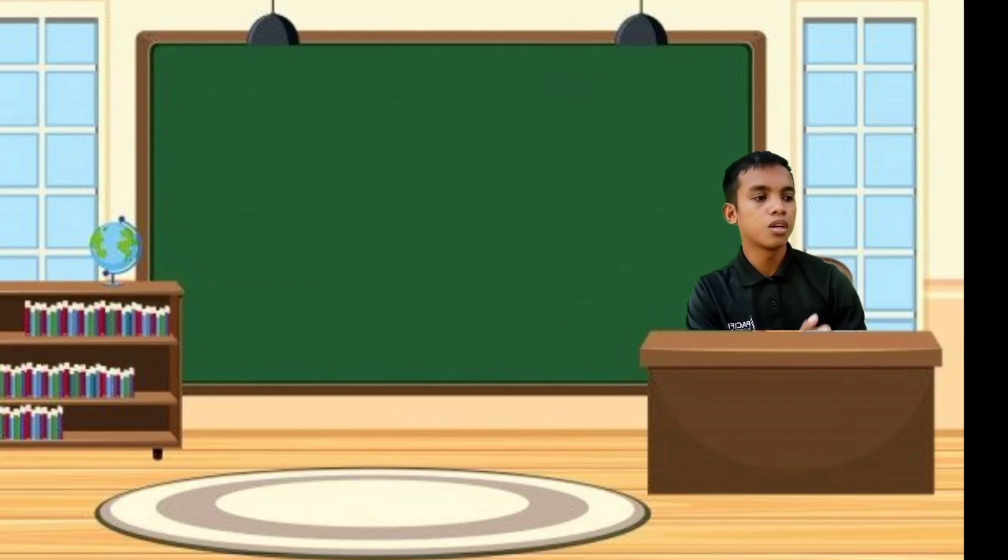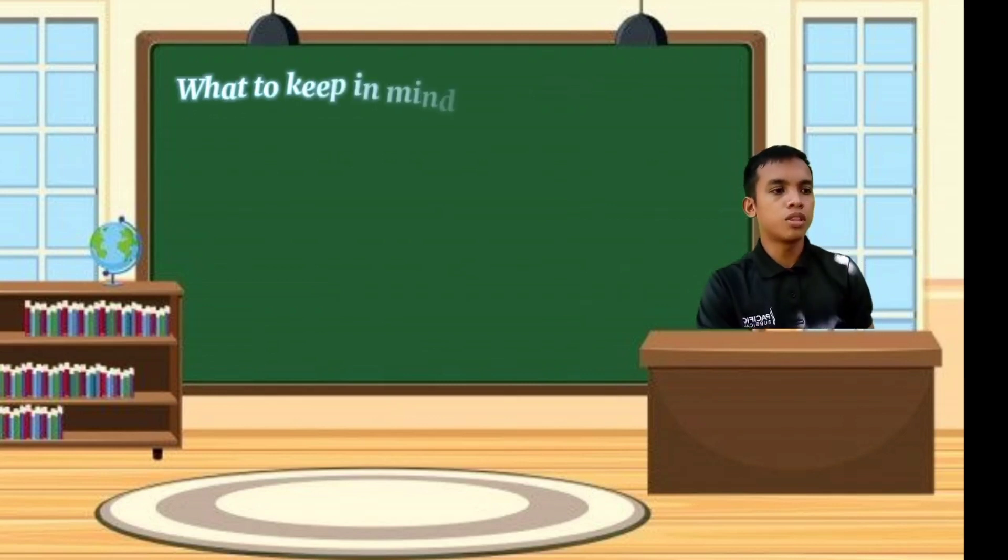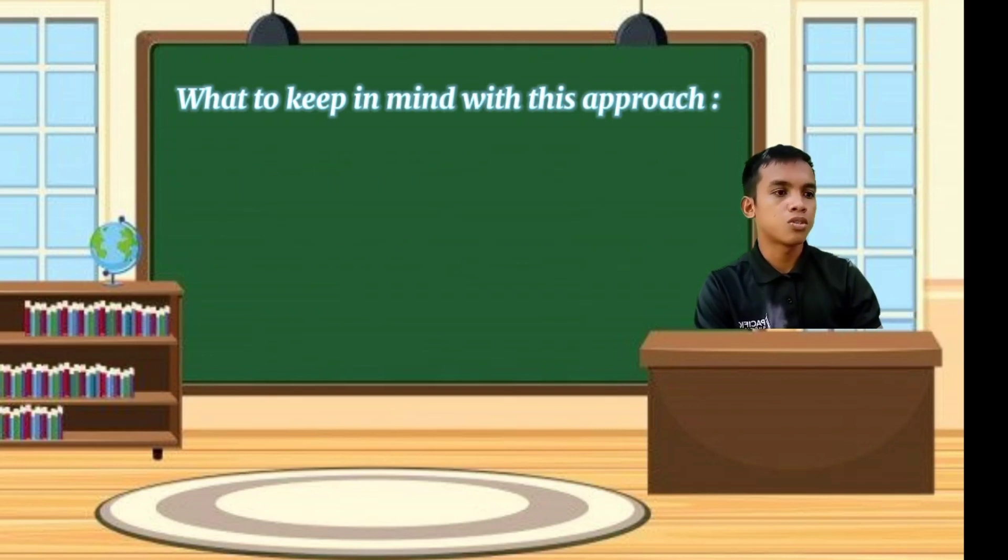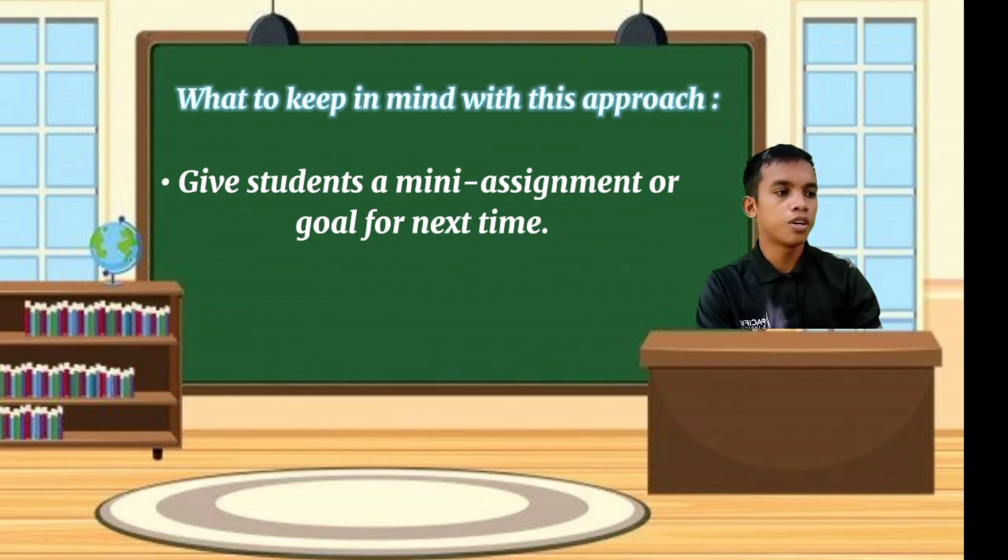Use the student's writing from class to discuss any errors. It is important not to overwhelm the students, though. Focus on only one or two errors per conference. Make sure you let the students do the bulk of the work. They'll remember more if they have to find and correct errors on their own, but do explain the concept and model revision techniques if the students seem stuck. What to keep in mind with this approach? First, don't overwhelm the students. Focus on one or two errors per conference.